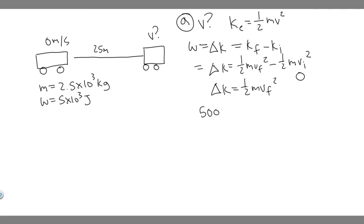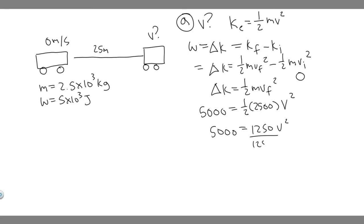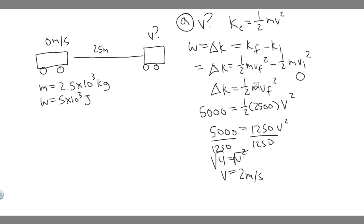So 5,000 equals one-half times the mass — 2.5 times 10 to the 3, which is 2,500 — times V squared. Calculating: 0.5 times 2,500 gives 1,250. So 5,000 equals 1,250 times V squared. Dividing both sides by 1,250 gives 4 equals V squared. Taking the square root, V equals 2 meters per second. That's your answer to Part A.